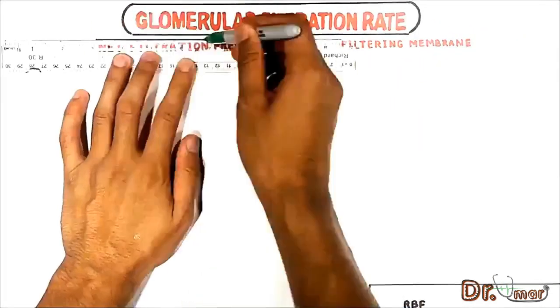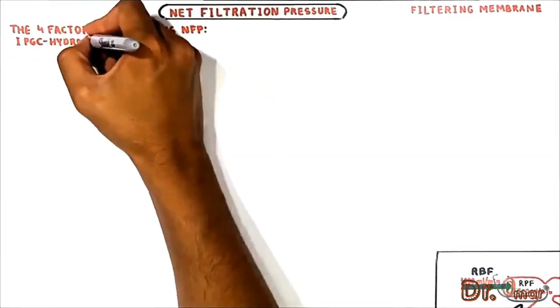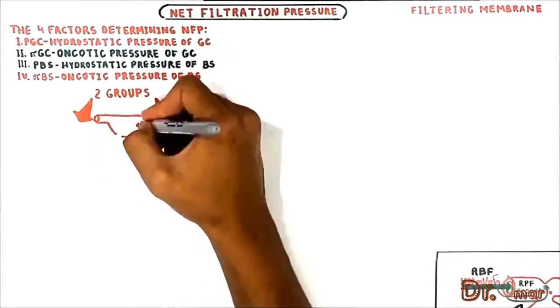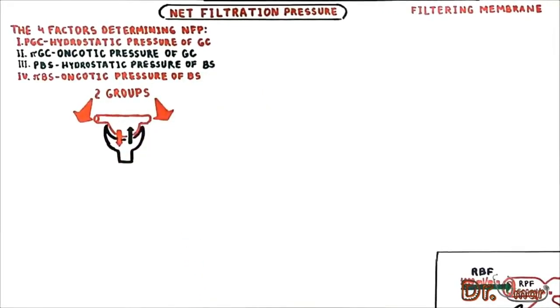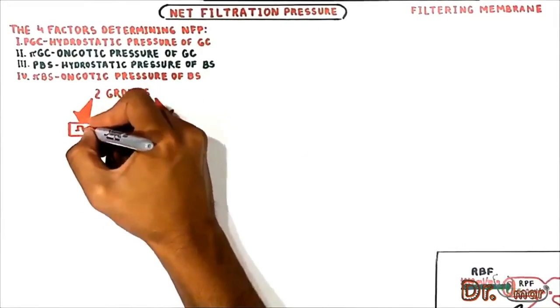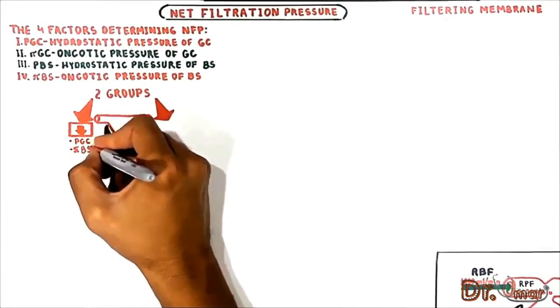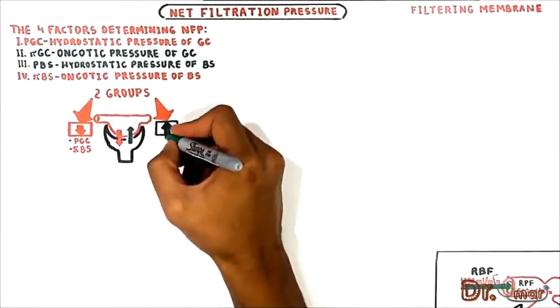First let's talk about net filtration pressure. As in other capillaries, there are factors determining net filtration pressure: hydrostatic pressure of glomerular capillary, oncotic pressure of glomerular capillary, hydrostatic pressure of Bowman's space, and oncotic pressure of Bowman's space. I will divide them into two groups: the forces that promote filtration and forces that oppose filtration.